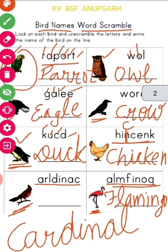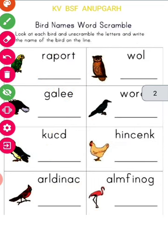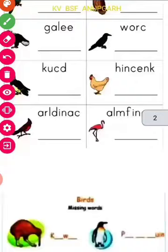Those who have done well — good. Those who have not done well, note them down. We will write them in copy five times and then we will remember them. Come on, next page.